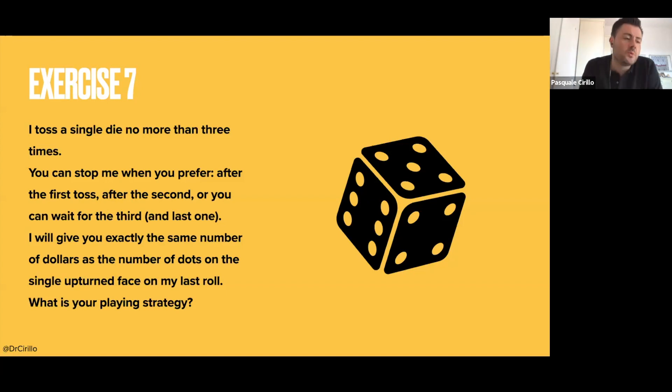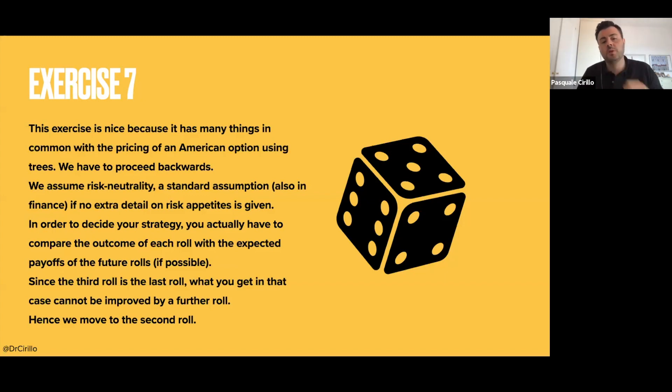Now the point is, what is your strategy? How can you decide when you stop? Do you wait until the third toss, just the second, you stop after the first? Now here, what we do is just to apply the same thing that we would apply for American options. We will also assume that we are risk neutral. This is interesting in the sense that since nobody is telling you anything about risk appetite, we assume that we are neutral to risk. So we not necessarily look at the strategy that minimizes the variance or standard deviation. Since we don't have information, we are just assuming the basic setting of risk neutrality.